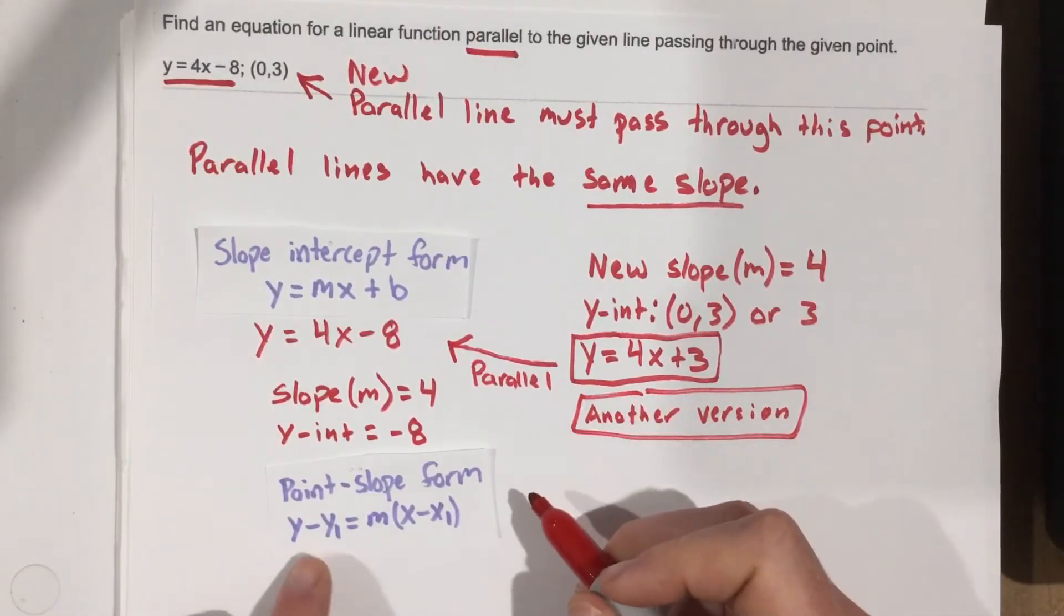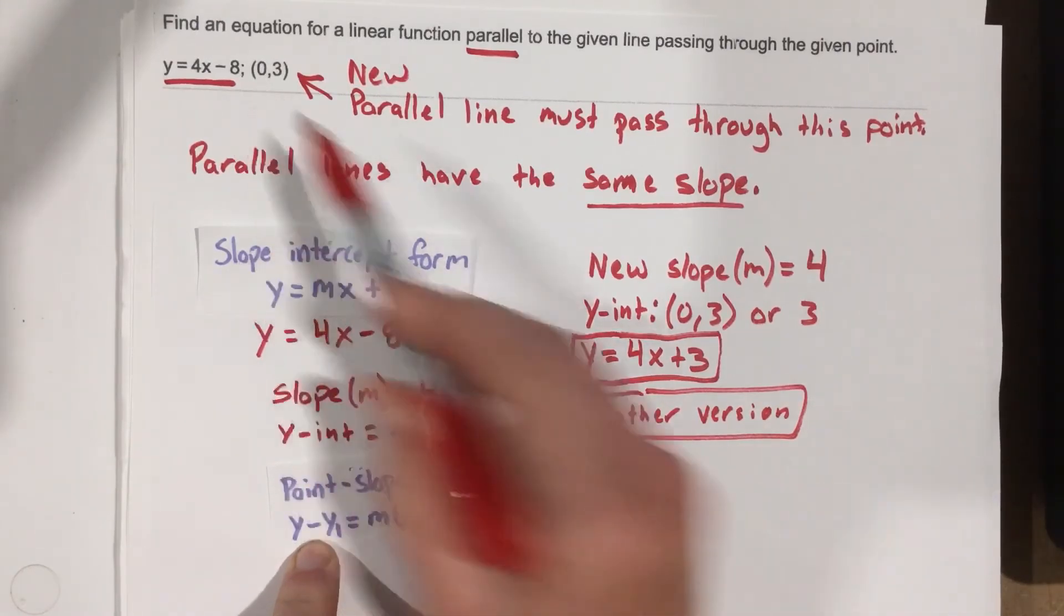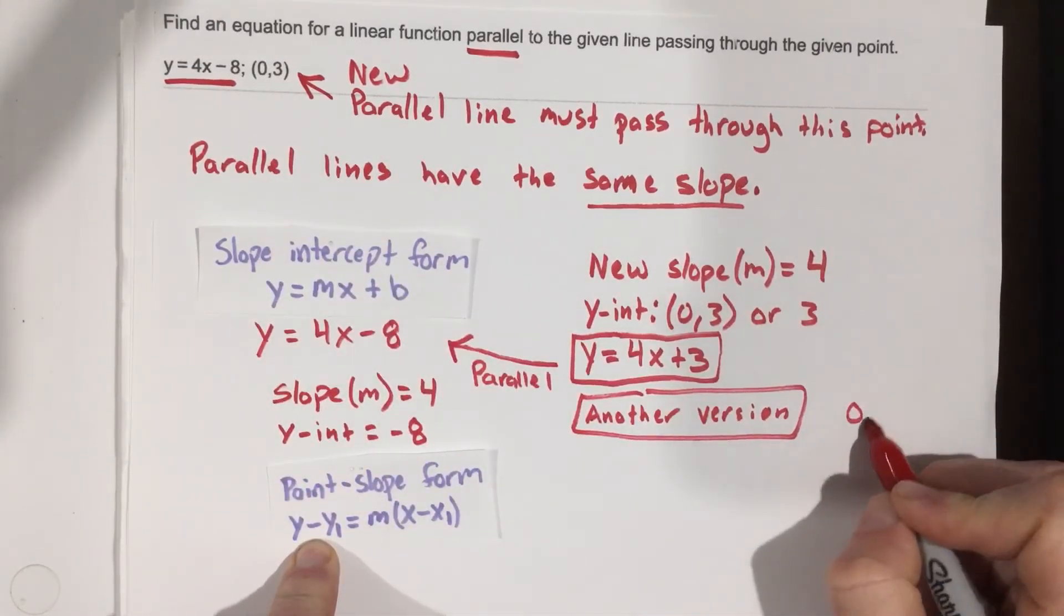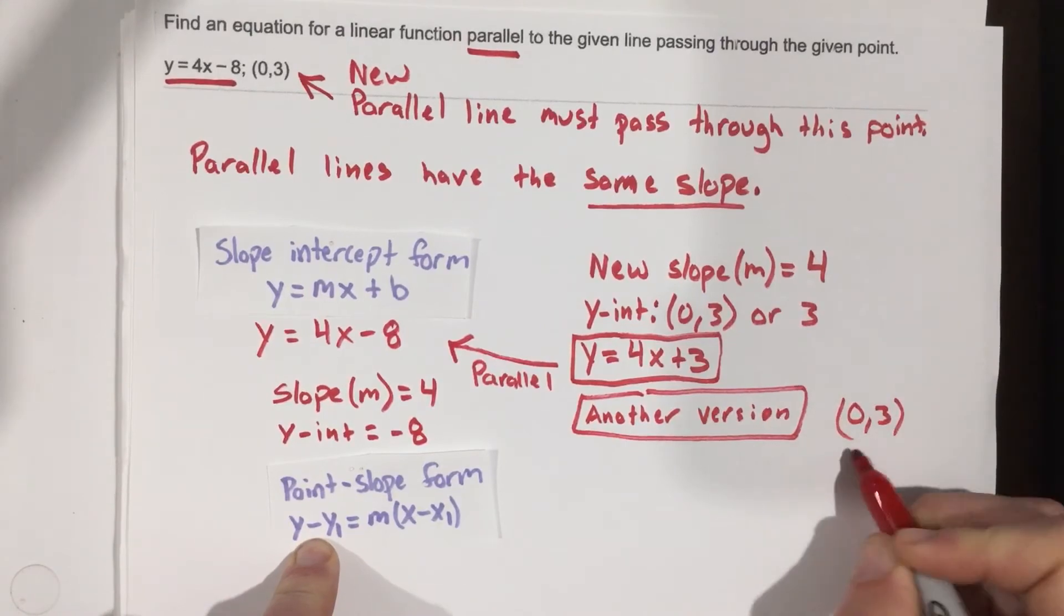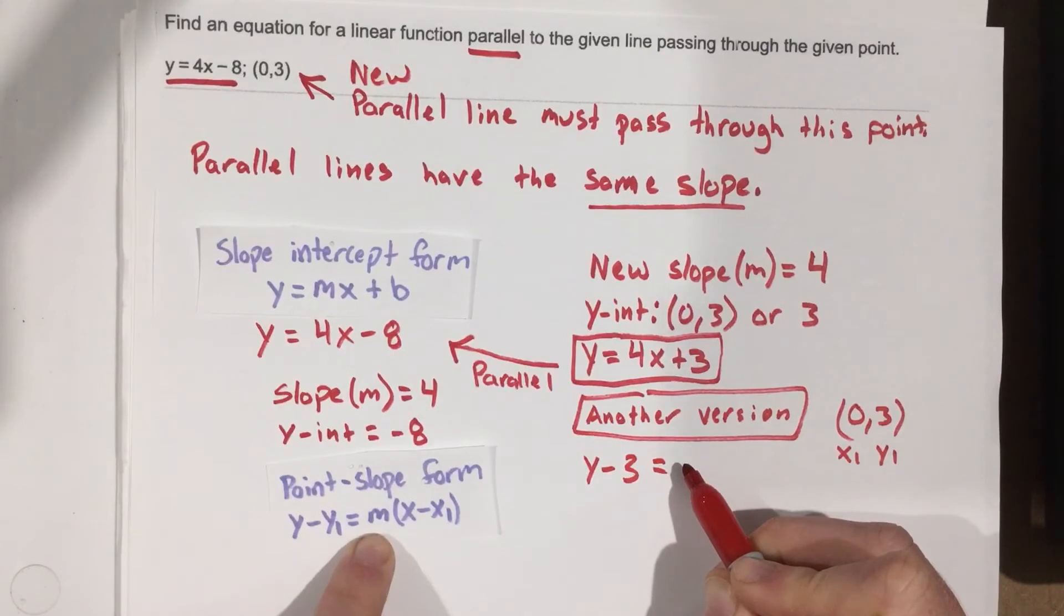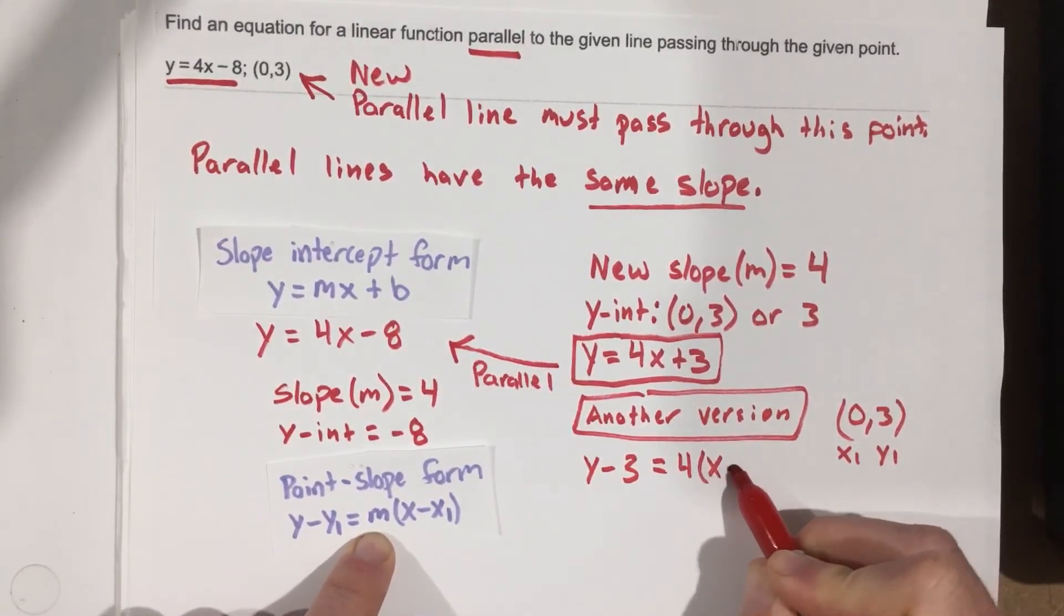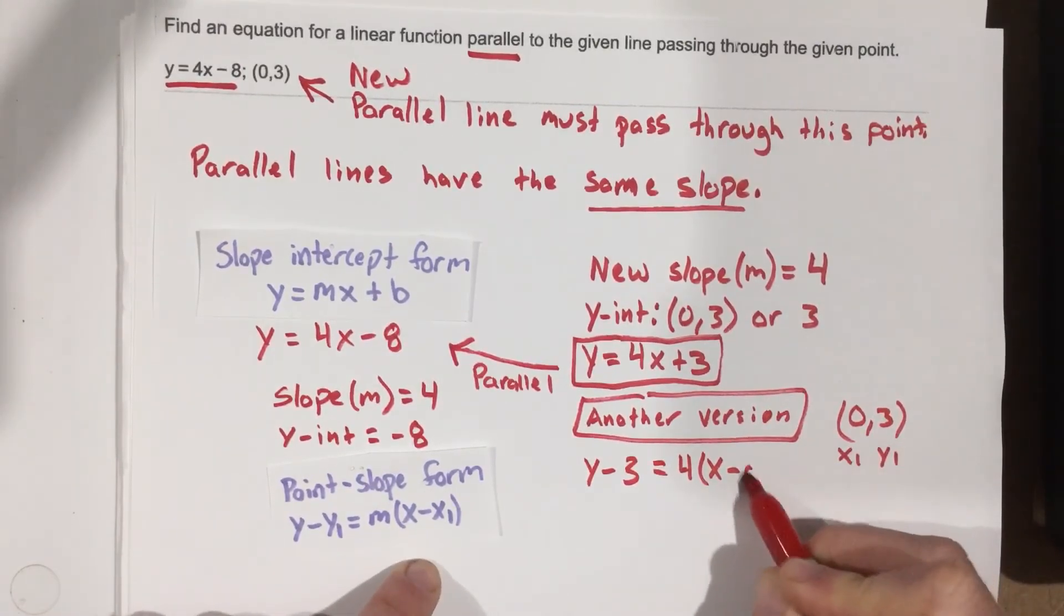So in this other version, we end up with the same answer. So we would say y minus y1. We're going to use 0, 3 here. So this is 0 and 3, and this is x1 and y1, right, just the first coordinate, x and y. So we're going to say y minus 3 equals our slope m, which we know we need to use 4 because it's parallel, and then x minus our x1, which is 0.